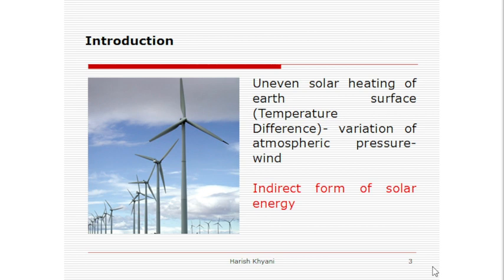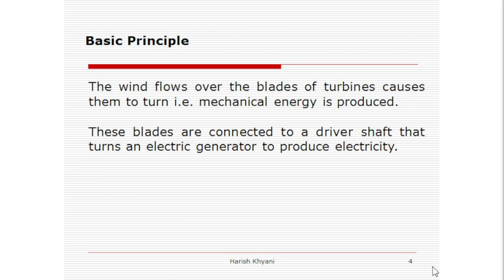First, let us try to understand what is the reason to flow the wind. Wind energy is in direct form of solar energy. The wind energy is nothing but the indirect form of solar energy. This is the introduction part. Here I will show you the image. This is a tubular wind turbine.